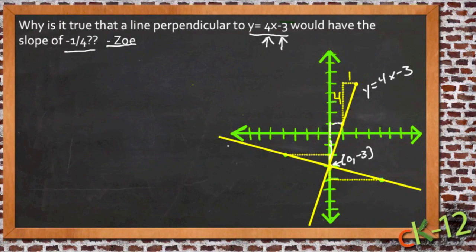Now, the perpendicular line, if we assume it goes through the same y-intercept, so we'll start at that same point. A perpendicular line is obviously one that meets at a 90 degree angle right here.